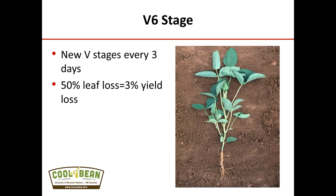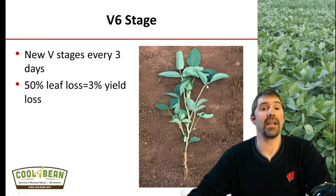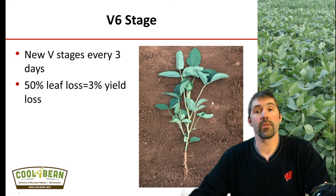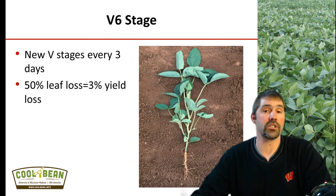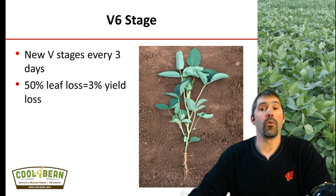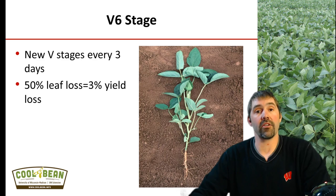The last vegetative growth stage we get into is known as V6. At this time we can see new trifoliates put on every three days, and at this point if we start seeing any type of defoliation or crop injury due to herbicide application or drift, a 50 percent leaf loss at V6 leads to about a 3 percent yield loss at harvest. Even at this late V stage — which would probably be in most situations across Wisconsin around the third week in June — we can still see some pretty substantial leaf loss and still get minimal yield loss, based on the compensation ability of that soybean plant.